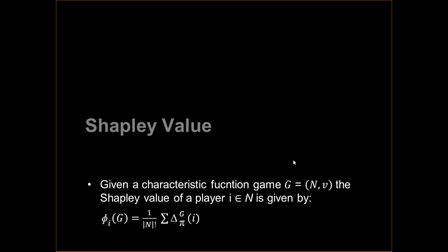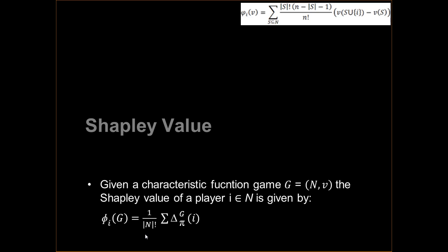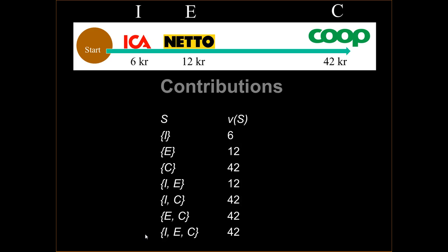So how do we solve this? We use Shapley values. I'm going to show the Shapley value by a simple numerical example — it means we are taking the average of the marginal contributions by each player over all permutations of players. Here are the potential coalitions: the contribution of the coalition with Ika only would be 6, and any coalition involving Coop will have the value 42, because that's from start to Coop.